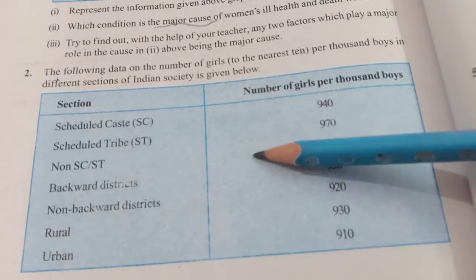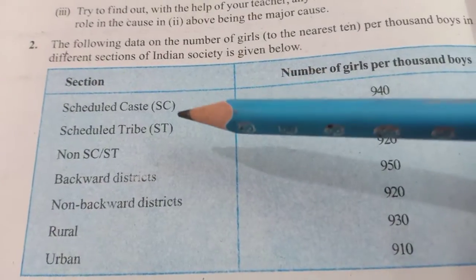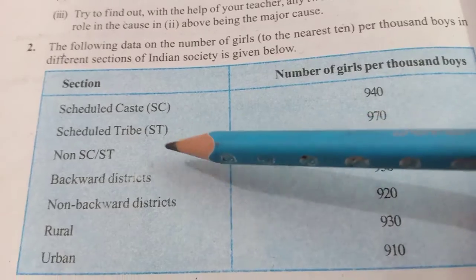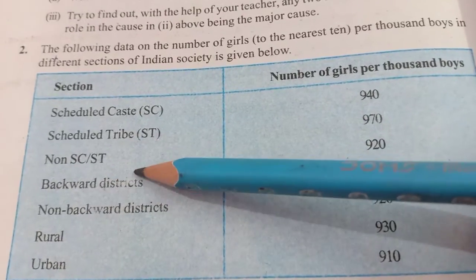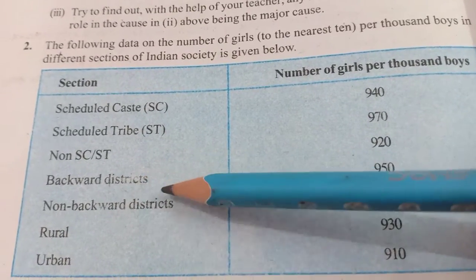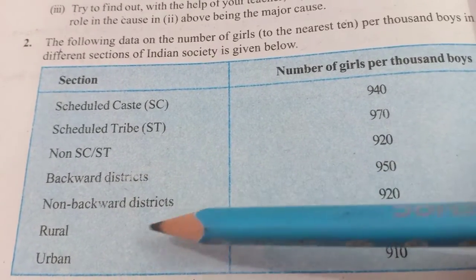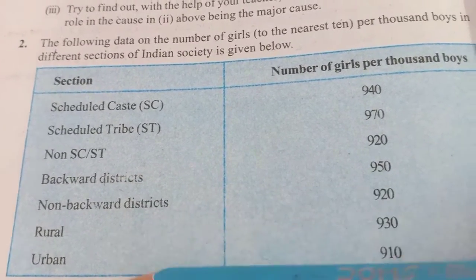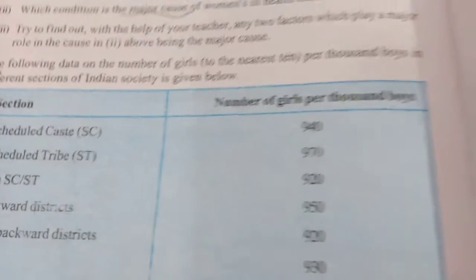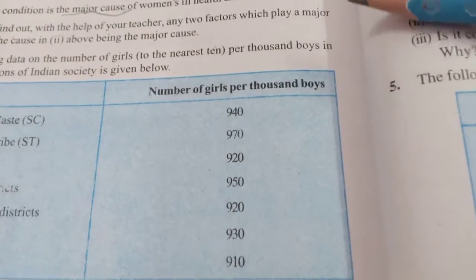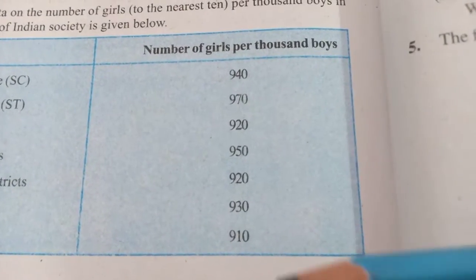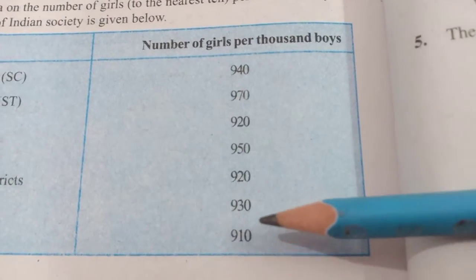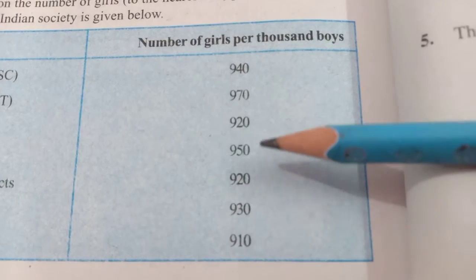Now I am moving to the second question. For this question I have to draw a bar graph. Sections given are: schedule caste, schedule tribe, backward districts, non-backward districts, rural, urban. अगर हम इसके table की values की तरफ देखें तो सारी values 900 के बीच में आ रही हैं।